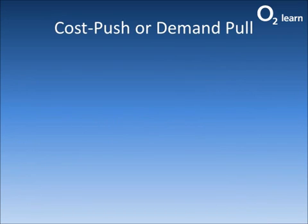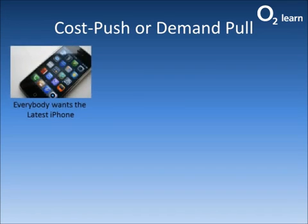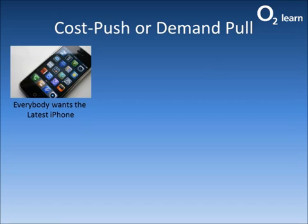So now let's have a little bit of fun. Let's decide if it's cost push or demand pull inflation — press pause and then I'll tell you the answer. Everybody wants the latest iPhone — cost push or demand pull? Yes, you're absolutely right, this is demand pull. Everybody wants one, so the price is very high. Notice how those other phones are much cheaper — you can buy an Android phone for less than £80.